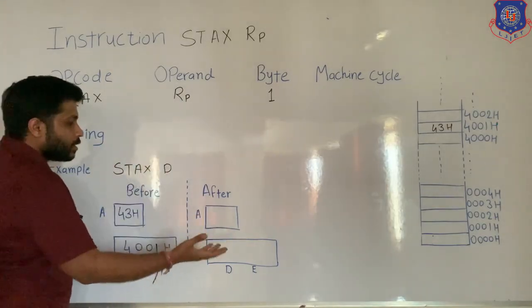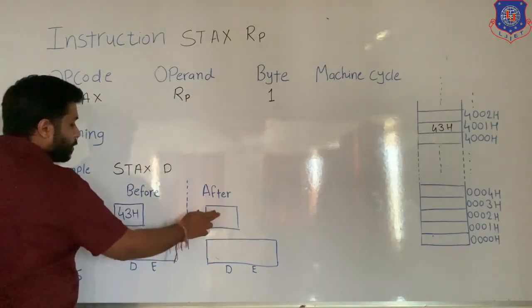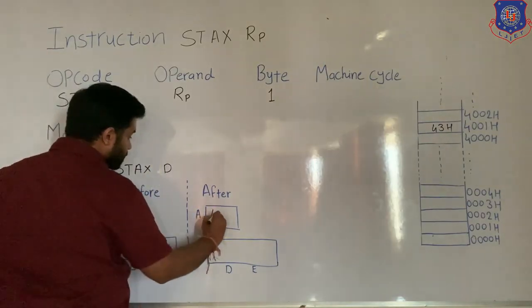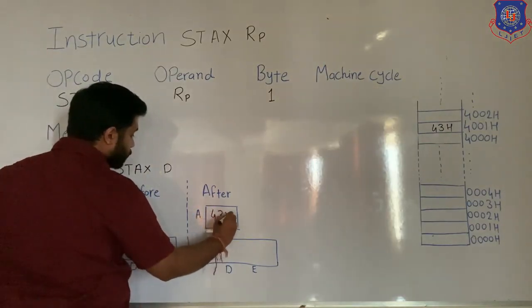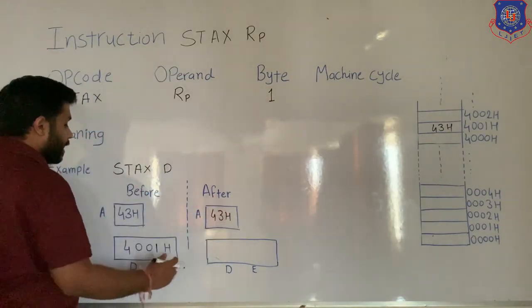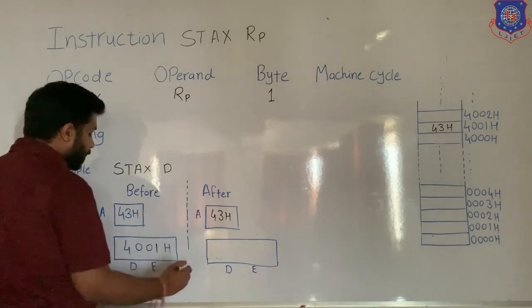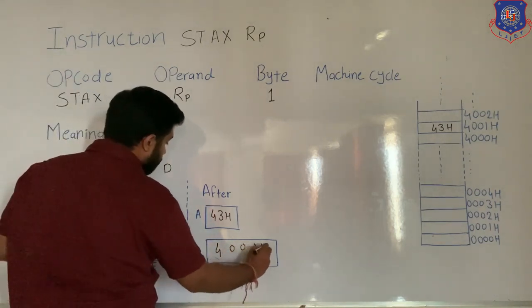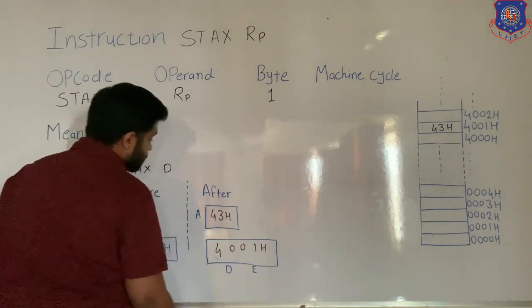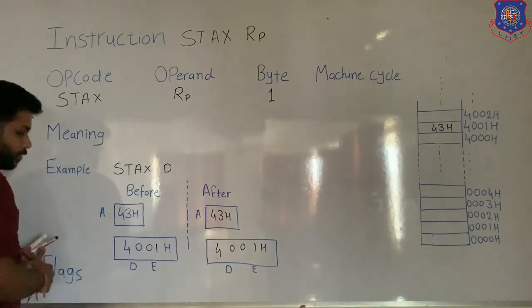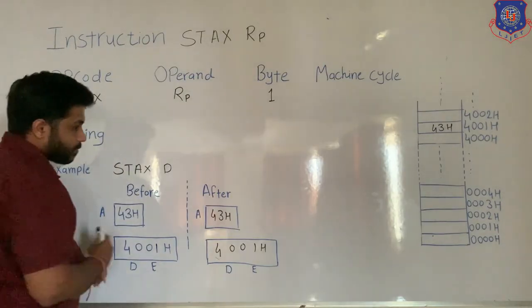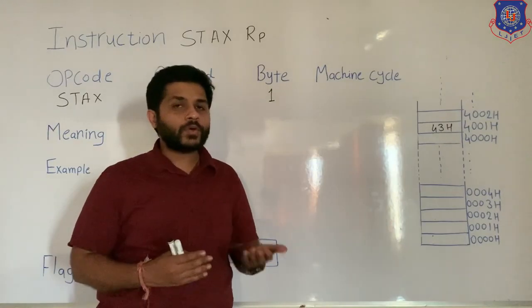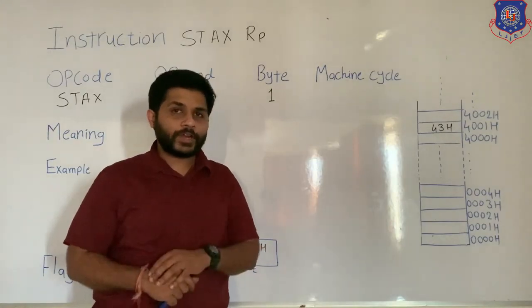After execution, a copy of the data remains in the accumulator, meaning the accumulator still contains 43H. And in the DE pair, 4001H will remain the same. Regarding flags: because STAX is a data transfer instruction, no flags are affected.